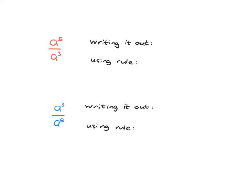Remember when we started doing this we did it by just writing it all out. We knew that a to the power of 5 just meant you've got 5 a's all multiplied together, and a to the power of 3 means 3 a's all multiplied together. You could then cancel and see you were left with just a times a, which is a squared on the top.